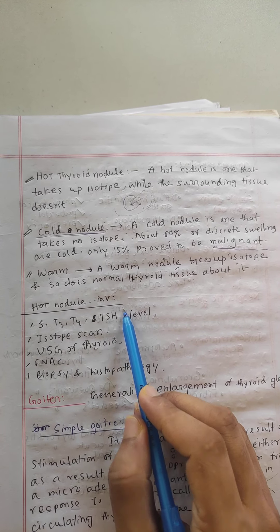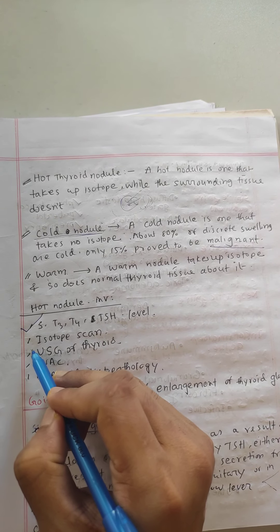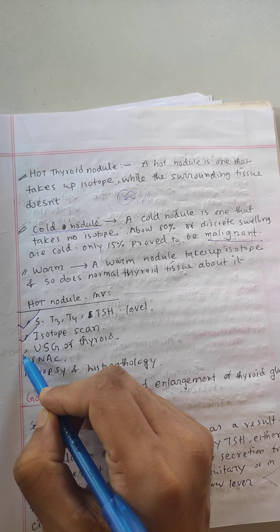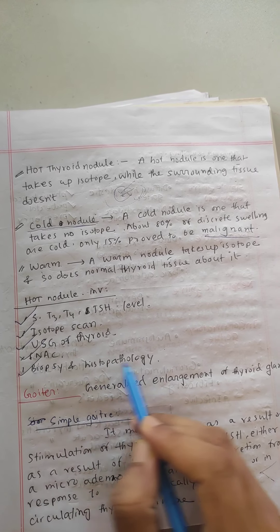What is the hot nodule investigation? First, test serum T3, T4, and TSH levels. Then isotope scan, ultrasound of the thyroid gland, then FNAC, then biopsy and histopathology.